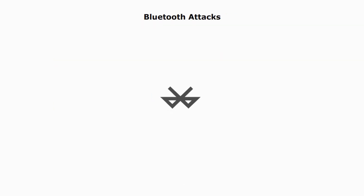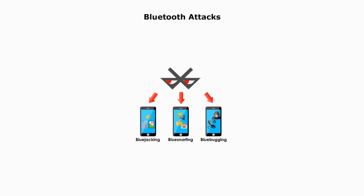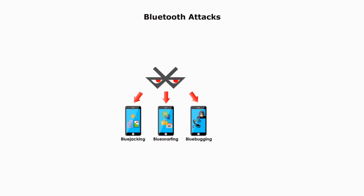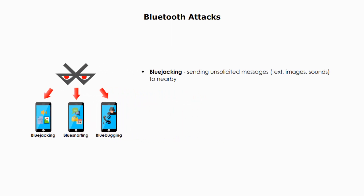Now let me talk about security using Bluetooth. Bluetooth is very convenient to connect different types of digital devices, but convenience always creates another problem: security. I will list three types of Bluetooth attacks. The first one is called Bluejacking. Bluejacking means sending unsolicited messages — like text, images, and sounds — to nearby Bluetooth devices.